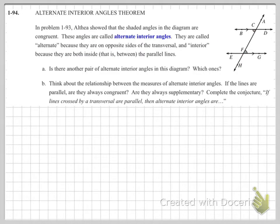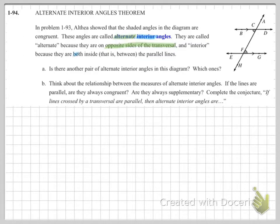Now on problem 1-94, we're getting introduced to the vocabulary words. The names actually make sense — except maybe complementary and supplementary — but everything in the transversal world with parallel lines is self-explanatory. The first term is alternate interior angles: alternate means opposite side of the transversal, and interior means both inside — between the parallel lines.